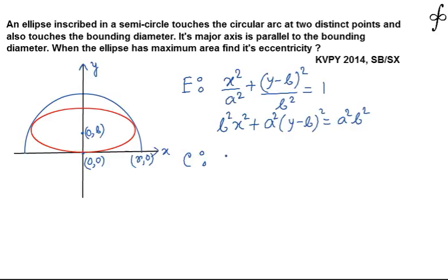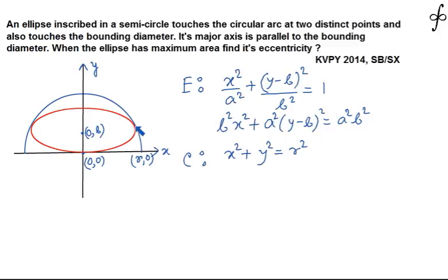The equation of the semicircle is x² + y² = R², with center (0, 0) and radius R. To apply the condition that the ellipse is inscribed in the semicircle, we solve the ellipse and circle equations simultaneously. At the two touching points, due to symmetry, the y-values must be equal, so we can eliminate x² by substituting from the circle equation into the ellipse equation.